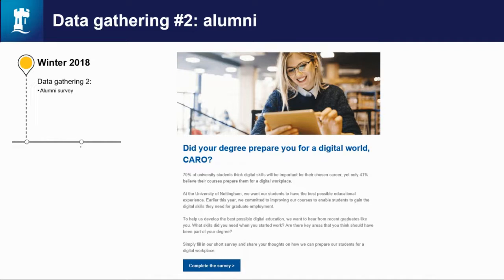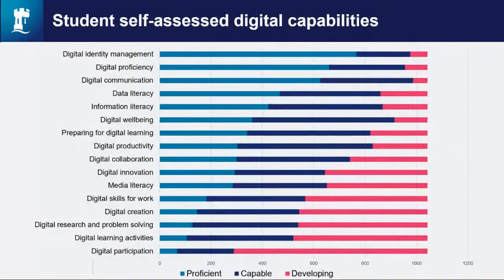We asked alumni what digital capabilities are needed in the workplace, which had been developed at university, and what support would have prepared them better. Around 1,200 students completed the discovery tool. Students felt most proficient in digital identity management, digital ICT proficiency, and digital communication. At the other end, they felt least proficient in digital participation, creation of digital learning activities, and digital research and problem solving.